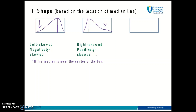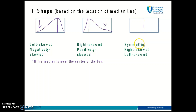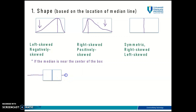Can you guess what a symmetric distribution looks like on a box plot? Right — if the median line is positioned right in the middle of the box, equally distant from quartile one and quartile three, it could be a symmetric distribution. However, a symmetrical box could also represent a right skewed or left skewed distribution, so you need to look at the whiskers to determine the shape.